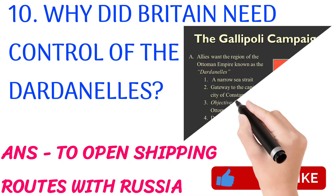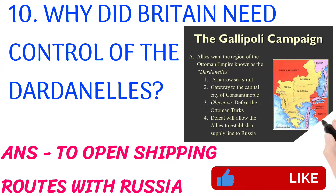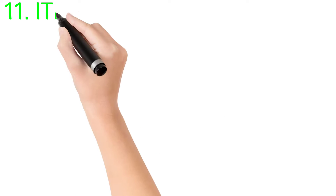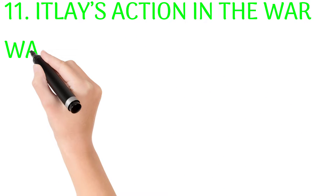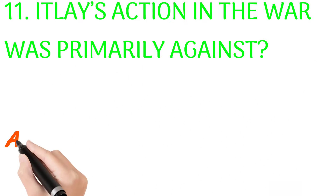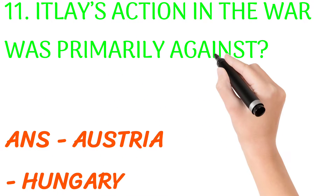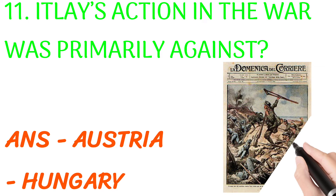If you are liking my content, then please like, share and subscribe to my channel for more such videos. Italy's action in the war was primarily against — answer: Austria-Hungary.